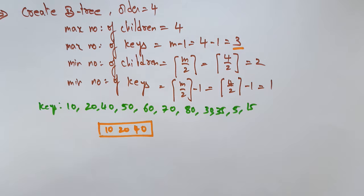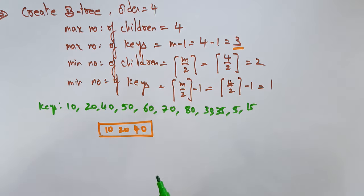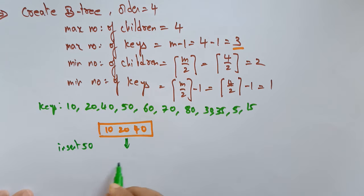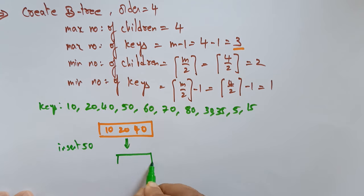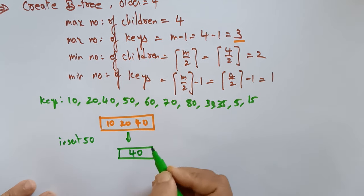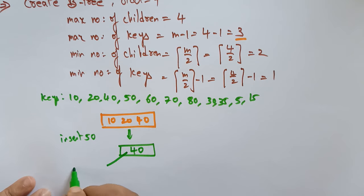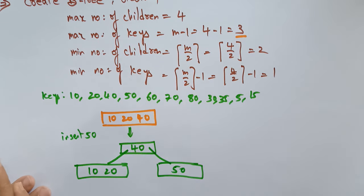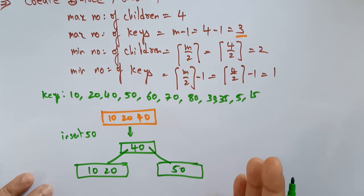Each node can hold only 3 key values, so I need to split the node to insert 50. The node splits with 40 going up as root. The left pointer contains 10, 20 and the right pointer contains 50. The left side should be less than the root node and the right side should be greater than or equal to the root node.